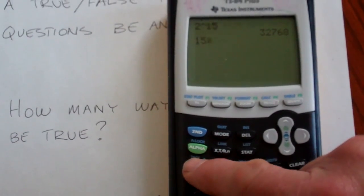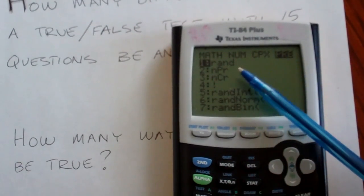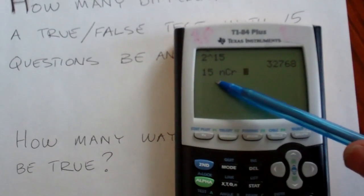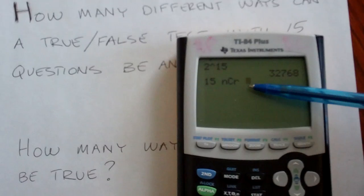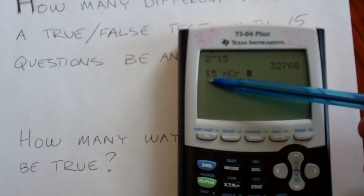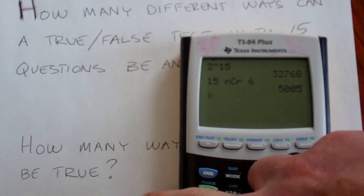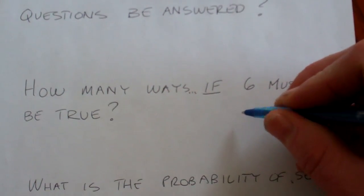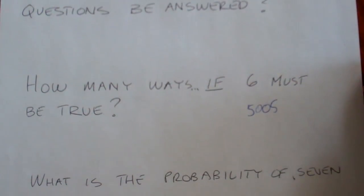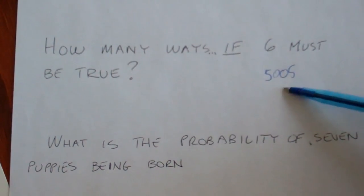We go over to PRB — left arrow once is easier than right arrow three times. Some newer calculators say 'Probability.' We want NCR, which is option number 3. So typing 3 shows 15 NCR. The extreme left-hand case would be 0, giving 1. But we're doing 6, so we do 15 NCR 6 and hit enter. There are 5,005 different ways to have 6 true answers out of 15 total. If doing a probability question with 15 coins, it would be 5,005 out of 2 to the 15th.